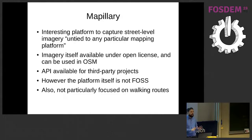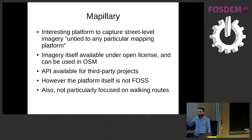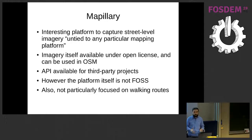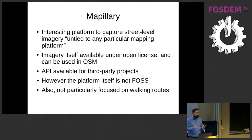Mapillary is an interesting platform — it's aiming to capture street-level imagery and connect the imagery together so you can navigate from one image to another. The imagery itself is available under an open license, but the platform isn't — the actual website and apps are not FOSS. There is an API available for third-party projects, as is common in these fairly proprietary platforms, but the platform itself isn't FOSS. Given that I'm looking for a completely FOSS solution, that's enough to consider Mapillary isn't fulfilling everything we need.